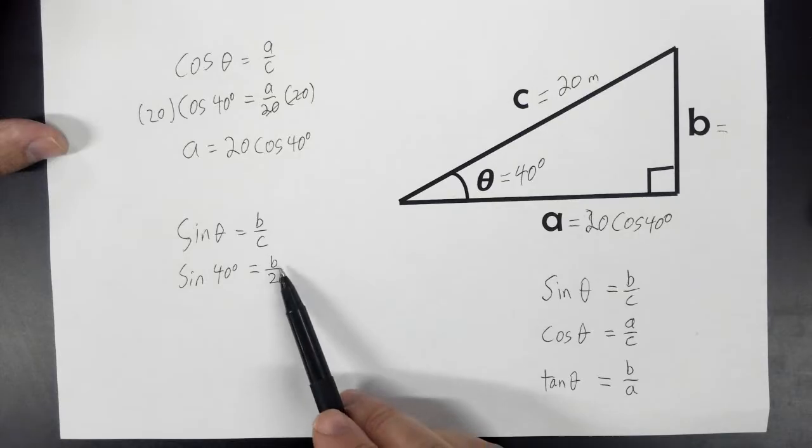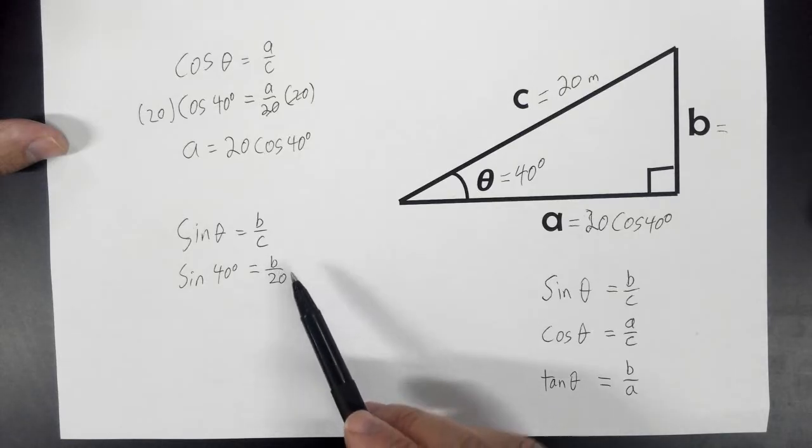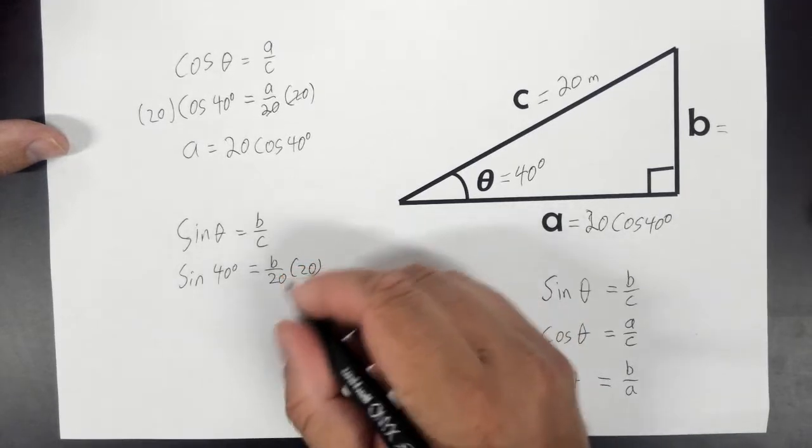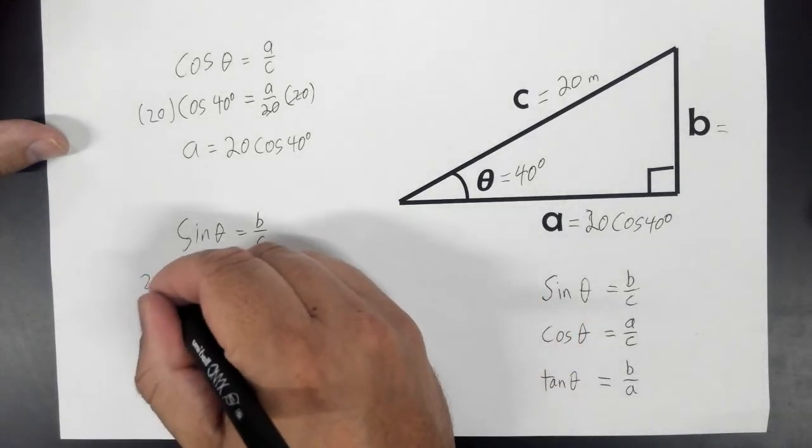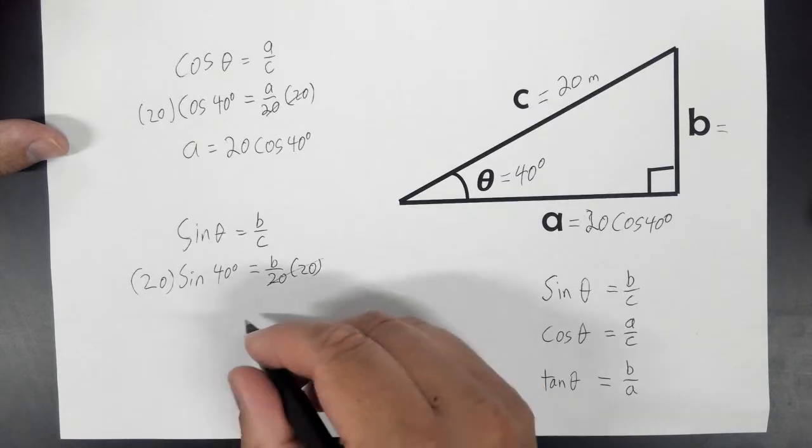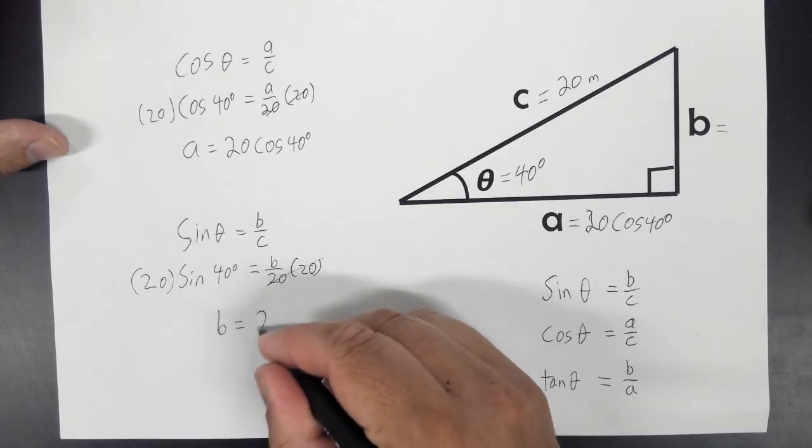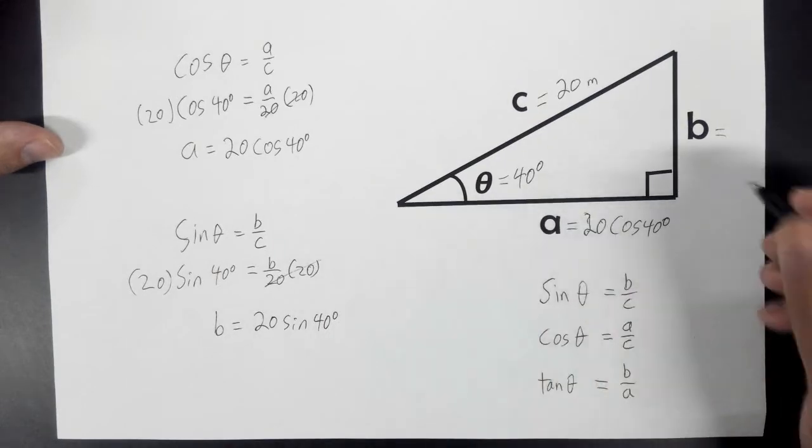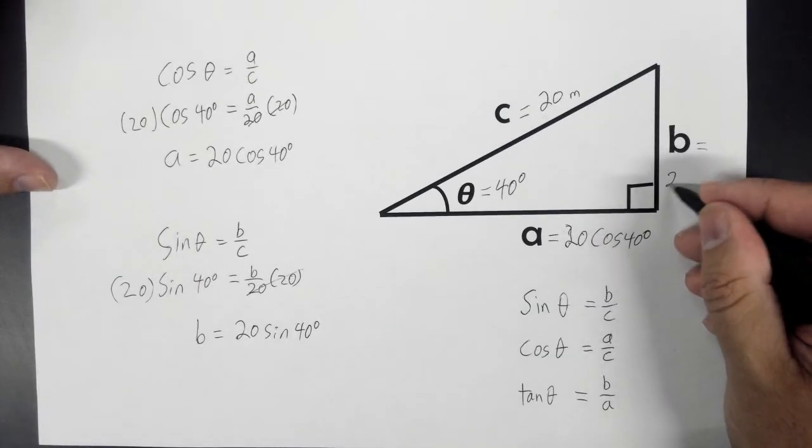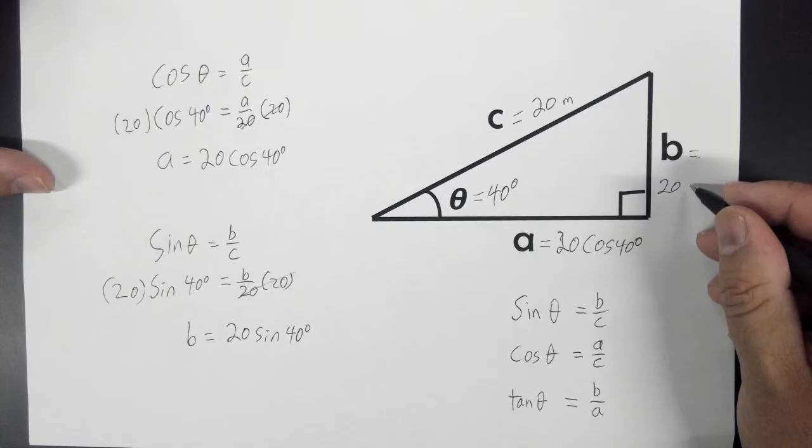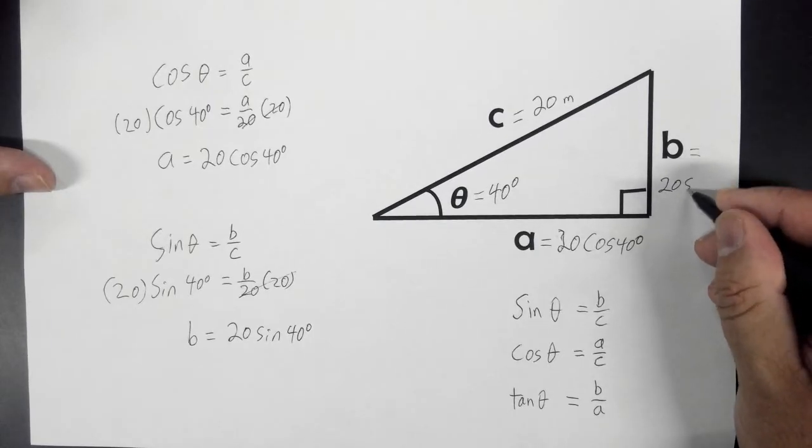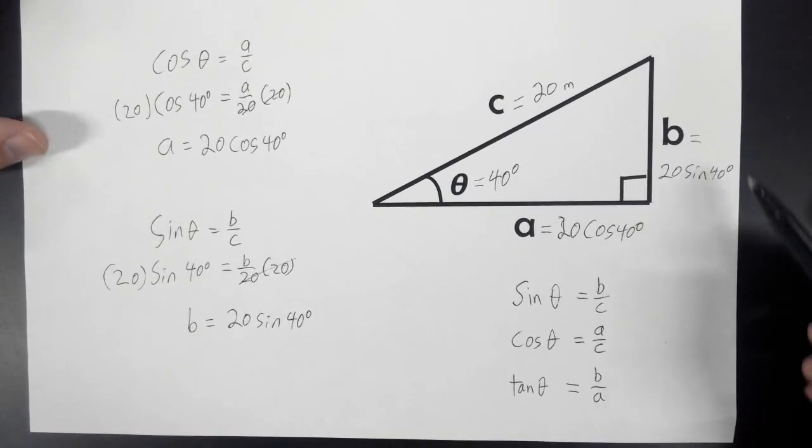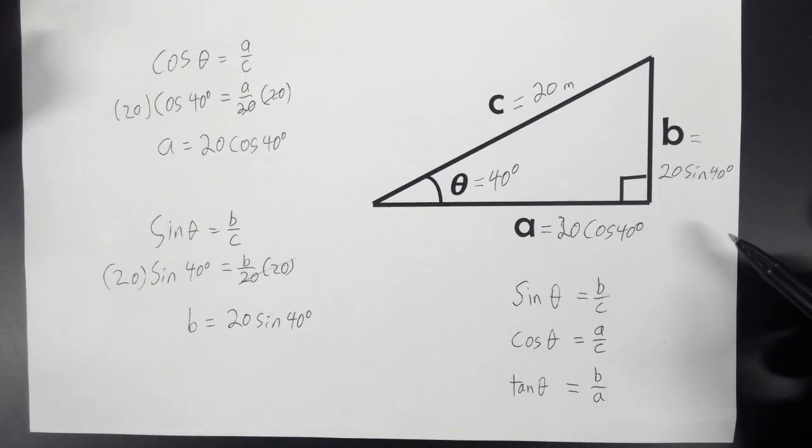We'll use algebra to get B by itself. Like last time, we multiply both sides by 20. That crosses out, and we get B equals 20 sine of 40 degrees. That is something you can put in a calculator and get an actual number for. But as I said on our test, you're allowed to leave it like that.